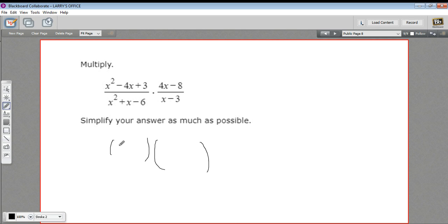The leading coefficient is 1 so I can just put x and x here. We've got a positive last term and a negative middle term, that means both of these are going to be negative. And the factors of 3 are just 3 and 1, and that works out - those two negative 3 and negative 1, that does add up to the negative 4 in the middle, so I think I factored that correctly.